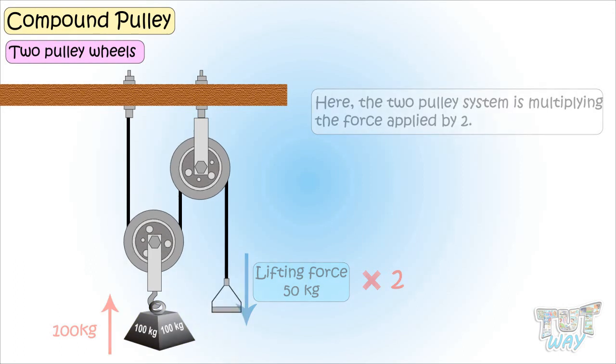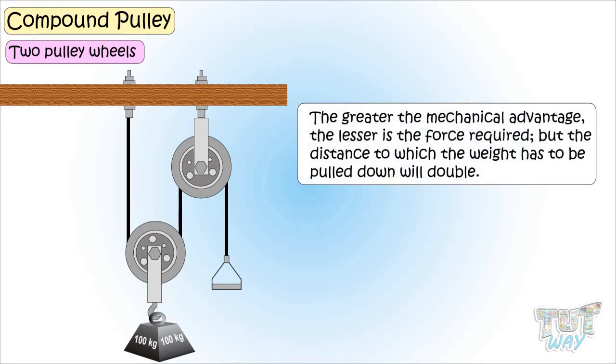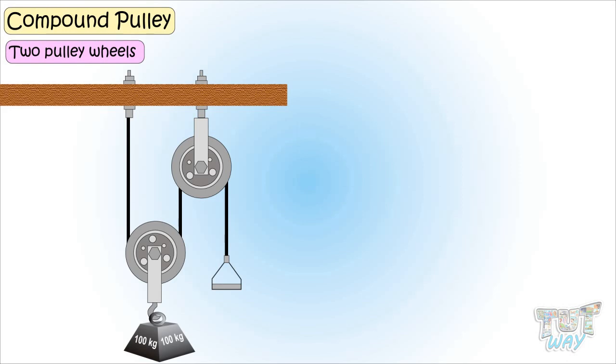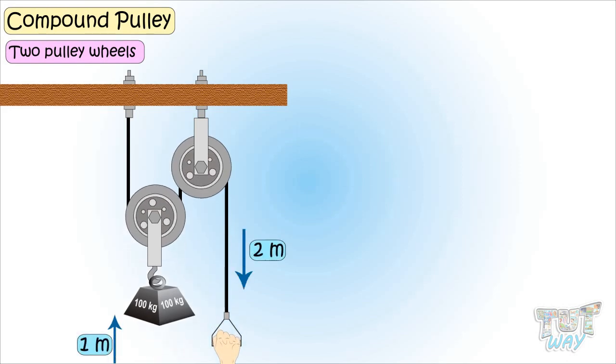So the greater the mechanical advantage, the lesser is the force required. But the distance to which the weight has to be pulled down will double. That is, the weight rises one meter here, but now we have to pull the loose end of the rope twice as far, that is by two meters.